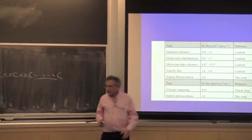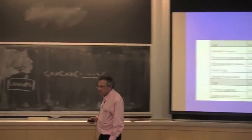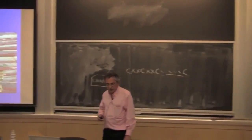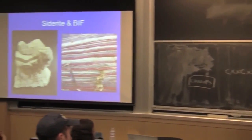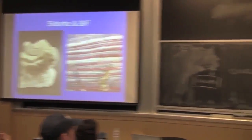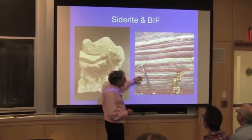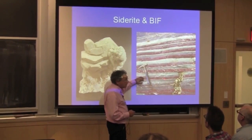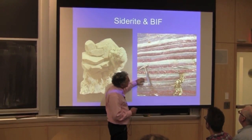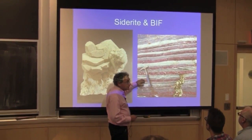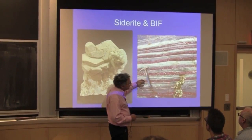Siderite can be oxidized and carbonate would be lost. Was it a form of the banded iron formations? Was it responsible for some of this? I don't know.